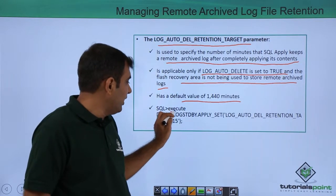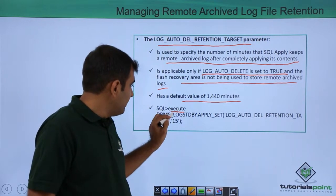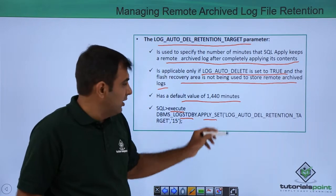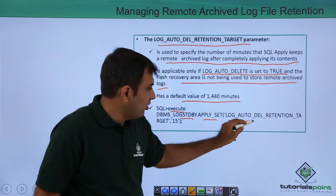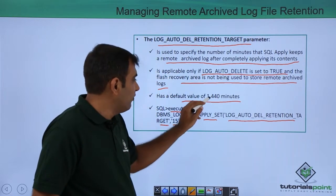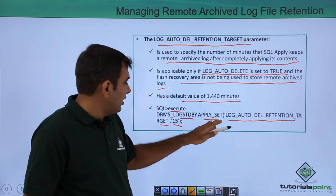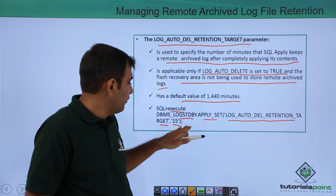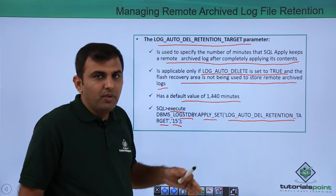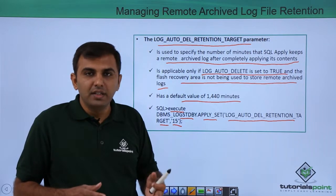If you want to change the retention value, execute the following on the logical standby: DBMS_LOGSTDBY.APPLY_SET('LOG_AUTO_DELETE_RETENTION_TARGET', 15). This changes it from 1440 to 15 minutes. After 15 minutes, whatever archive log files are on the logical standby will be deleted automatically.